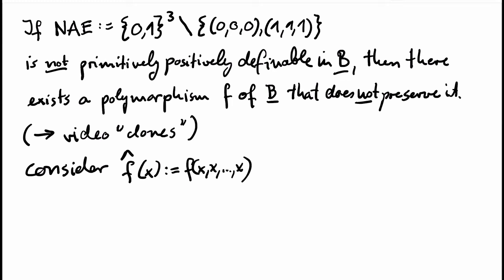The first is that hat F is constant. In this case, B also has a constant n-ary polymorphism, and constant operations are of course totally symmetric. So we are done in this case.